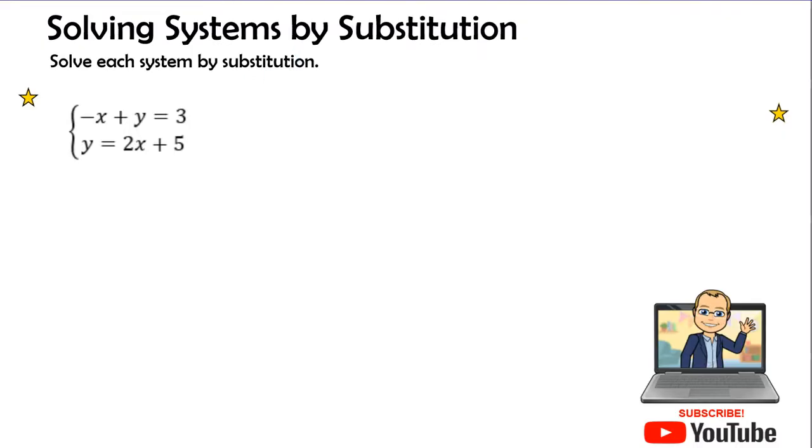And so in our first problem today, we have negative x plus y equals 3 and y equals 2x plus 5. Well, right away we can see that the y is isolated. So we're going to go ahead and box the expression on the right hand side, because that tells us that we are going to substitute that expression into the other equation for the value of y.